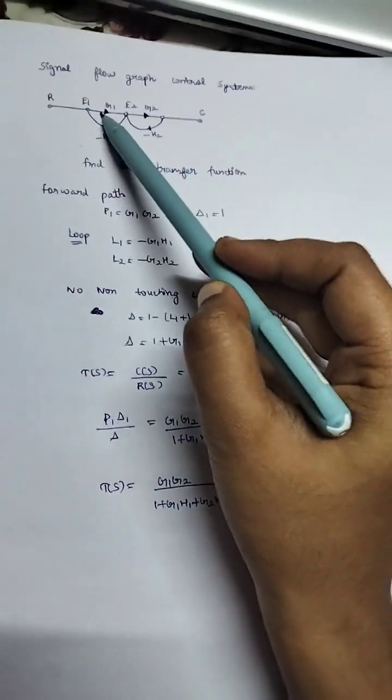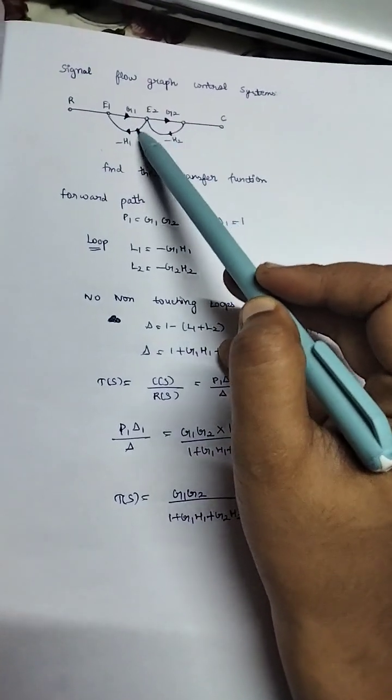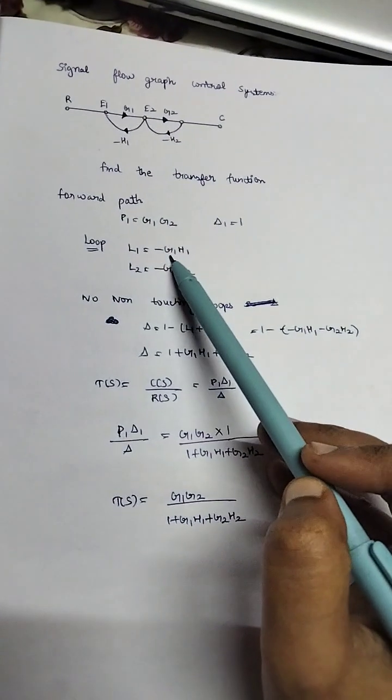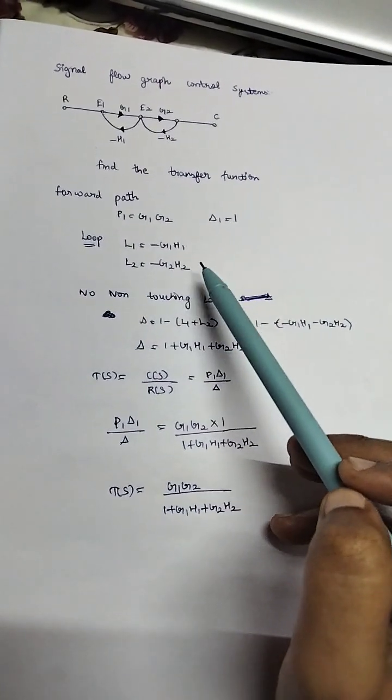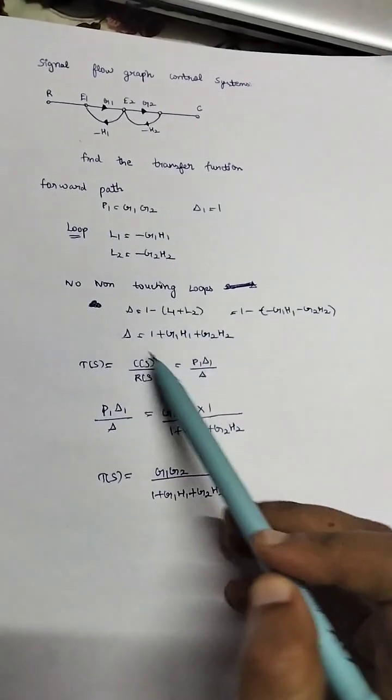Loops start from the same point and end at the same point. e1 goes to e2 and then goes to e1. e2 starts from e2 and ends at e2. So L1 equals minus g1·h1, L2 equals minus g2·h2. There are no non-touching loops. Delta equals 1 minus L1 plus L2.